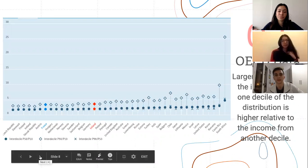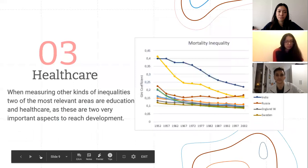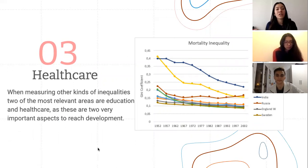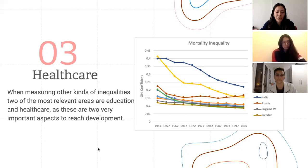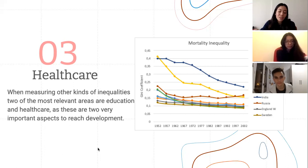Now we will explain other measurements of distribution inequality. When looking at other kinds of inequality, we thought that healthcare and education would be interesting sectors, as these are two factors that can lead a country to development. Regarding healthcare, it is very important to look at the mortality inequality index. The mortality rate has decreased in every single country since 1952 to 2002. However, in Russia, the rate started to go up again in 1987 — the only exception. India and Brazil have decreased at the fastest rate, while Sweden and England have remained constant. We can attribute this to the fact that European countries have had the lowest Gini coefficient in terms of mortality inequality, while third-world countries had the highest and have therefore made a lot of progress.